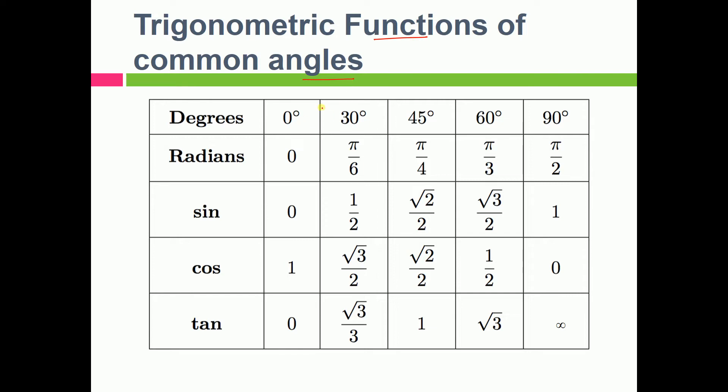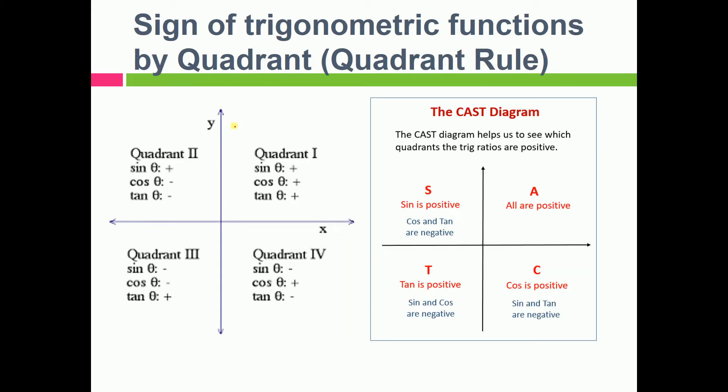Trigonometric functions of some common angles. These are some common angles values that mostly we remember actually, so sine 0 is 0, sine 30 is half, and all these. If you are interested you can take the snapshot and learn it.